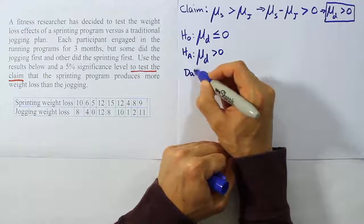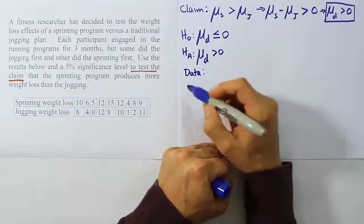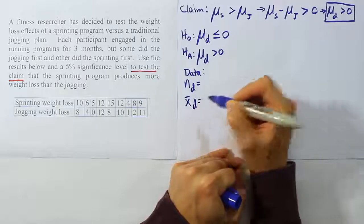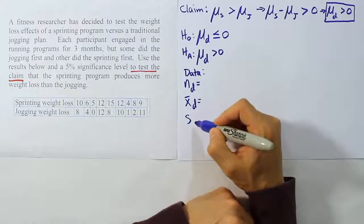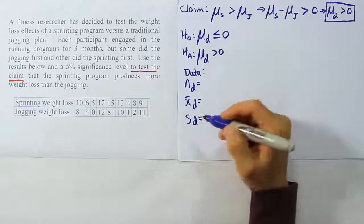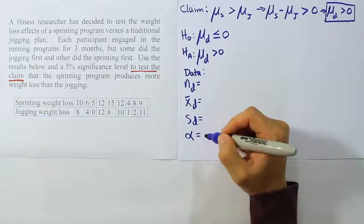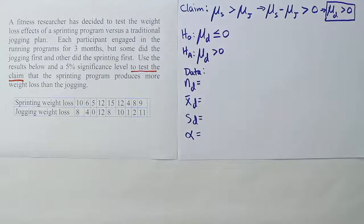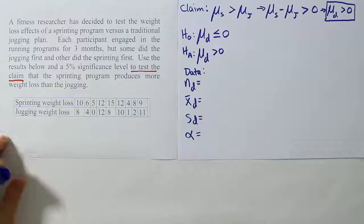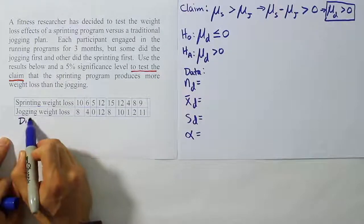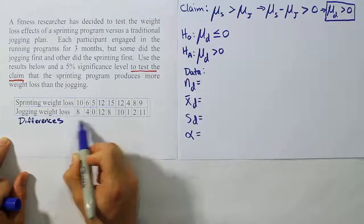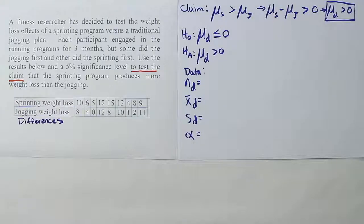Our next step is the data step. For this problem, the data step involves getting an N or a number of differences, then X bar for the differences, so an average difference, and then a standard deviation for the differences. And then finally we'll come up with an alpha that'll be given to us in the problem. Now in order to get the differences, what we're gonna have to do is to actually come along here and do subtraction for each of these values. So let's go ahead and do that quickly. This is a very easy bit of subtraction to do.